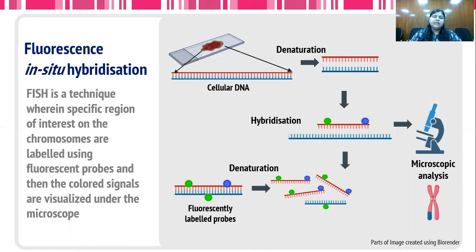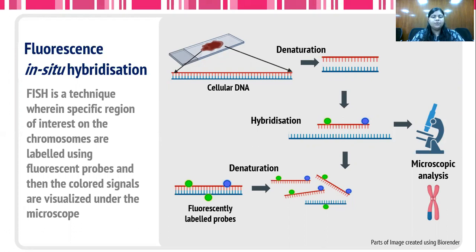In case of this technique, the DNA of interest is first denatured. There are also certain fluorescently labeled probes, which are also denatured. Then the DNA and the probes are allowed to hybridize together.